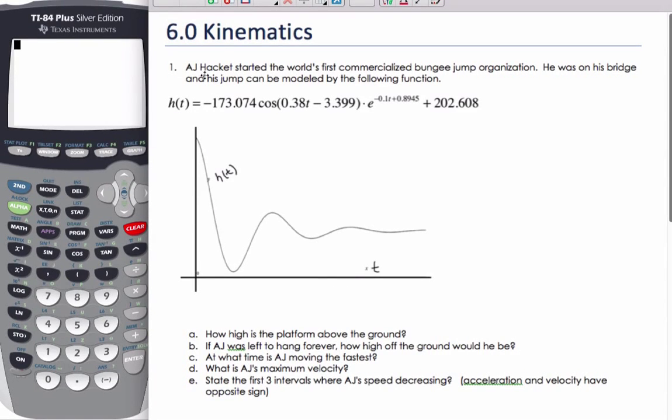Okay, so we are going to consider this kinematics problem which deals with height. We're given that A.J. Hackett, the world's first commercial bungee jump organization, and I've actually jumped off their first bridge, was on the bridge and he was modeled by this function.